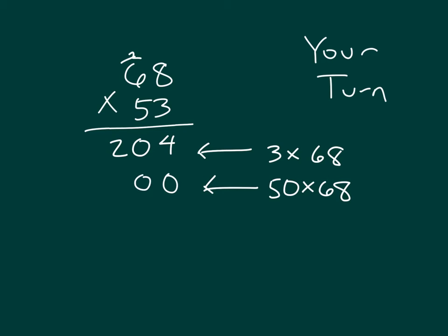Then we continue with that multiplication. 5 times 8, which is 40, 0, regroup of 4. And 5 times 6, which is 30, plus 4, which equals 34. We carefully add those two together. And does that match the answer that you got? Where the product is 3,604.